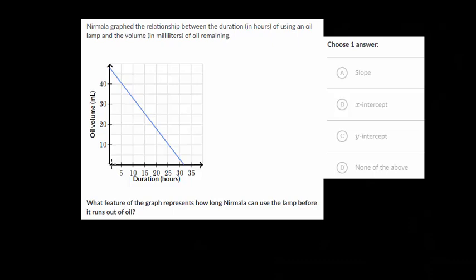So at hour zero, when it was first lit, it looks to be something close to almost 50 milliliters of oil remaining. And after what looks to be about 32 or 33 hours, there will be no oil remaining left. So at the end, after 32 hours, the lamp will essentially go out.